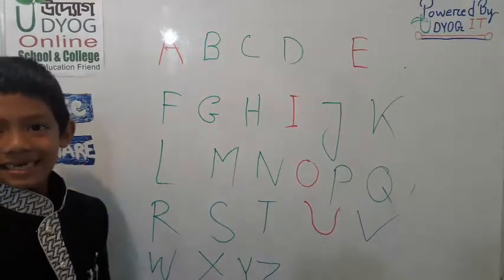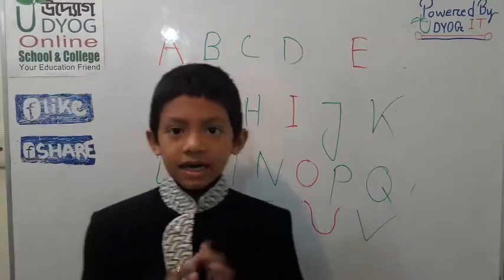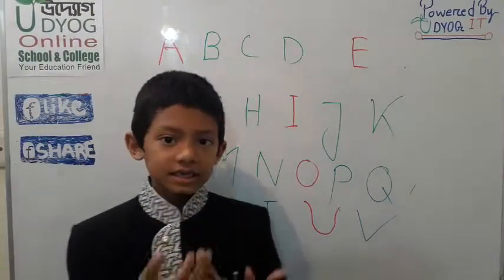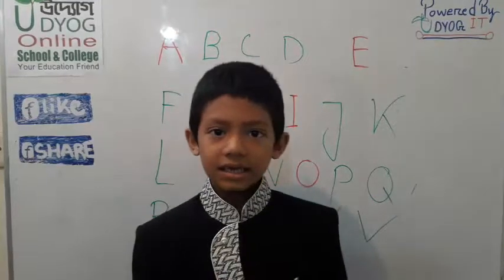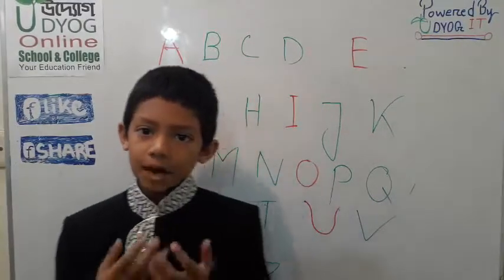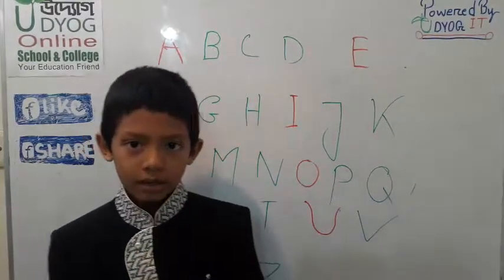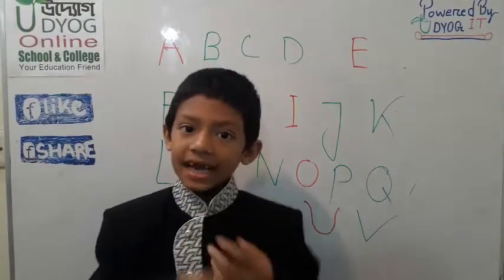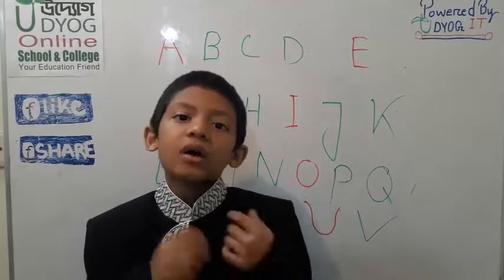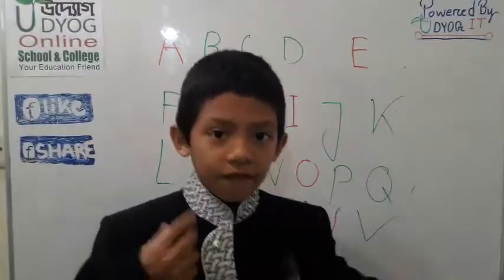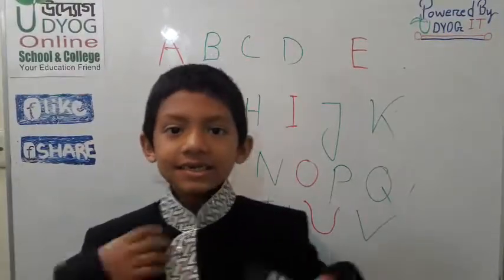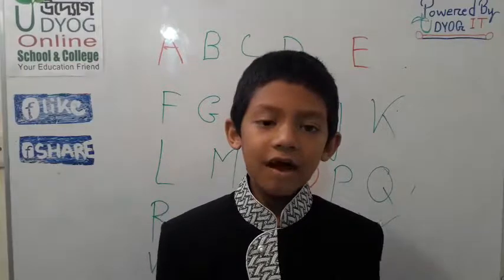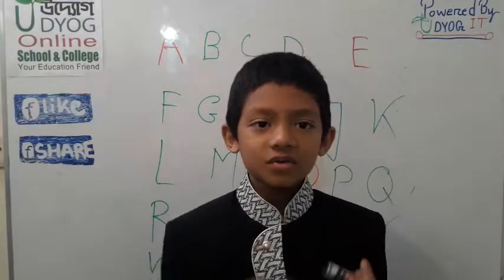Z. There are 26 letters in English — 5 are vowels and 21 are consonants. Friends, now listen to the vowel sounds.